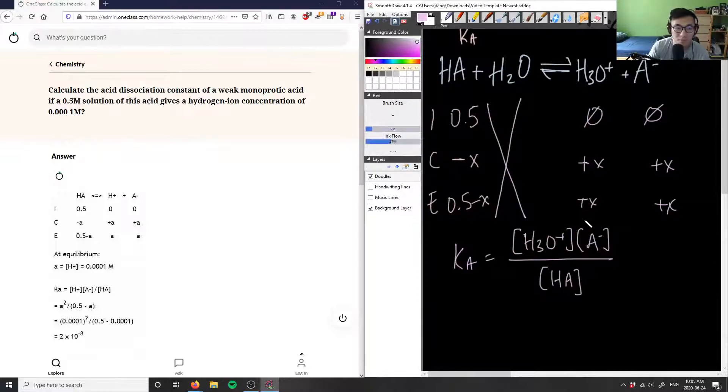So do we have the tools to solve this? Well we do, because it gives us 0.5 solution of our acid but it also gives us a hydrogen ion concentration of 0.0001, which means our concentration of the hydronium ion is 0.0001. So our x here is going to be 0.0001.